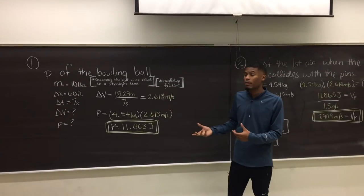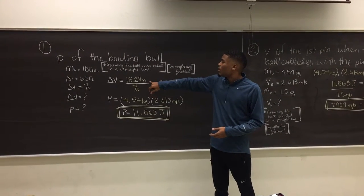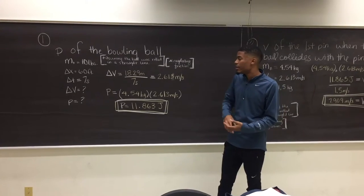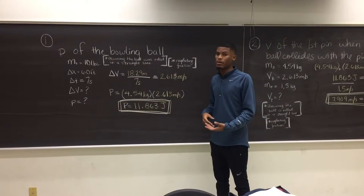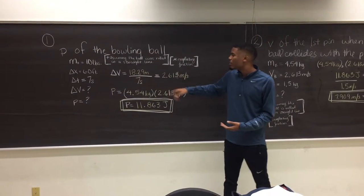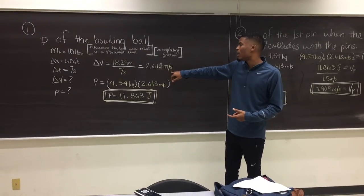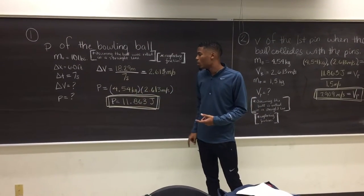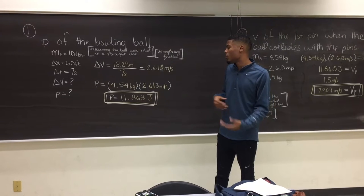So, we need the velocity to calculate momentum. We're going to calculate the average velocity by dividing the distance rolled, the distance of the bowling lane, by the amount of time it took from the ball leaving the guy's hand to hitting the first pin. The bowling lane is about 60 feet, that equates to about 18.29 meters. It took him about 7 seconds to actually hit the first pin. So, dividing 18.29 by 7 seconds is going to get us 2.613 meters per second. That's going to be our velocity. If we're going to multiply the velocity of 2.613 meters per second by the mass of the bowling ball, we're going to get a momentum of roughly 11.863 joules or kilograms per meters per second.